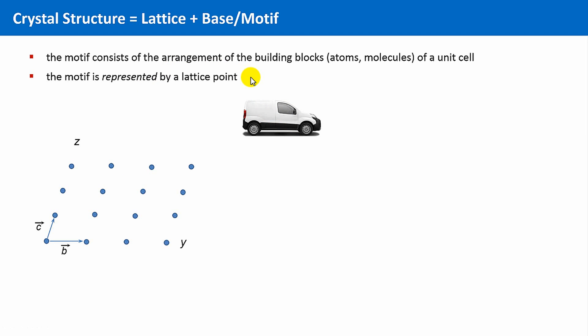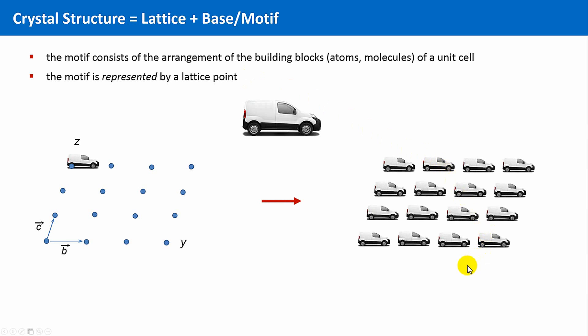And the motif is represented by a lattice point. And if we apply this translational principle to this car, we get this arrangement of cars, like a parking place. This parking place can be regarded as a kind of a two-dimensional crystal, if the cars are regularly arranged and if the cars are all of the same type.